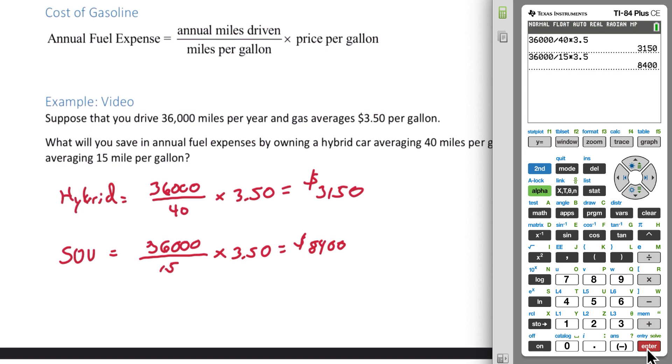These are the annual fuel costs for each vehicle. The question is how much will you save by owning a hybrid? Let's do $8,400 minus $3,150. That is a difference of $5,250 in savings if you use the hybrid instead of the SUV.